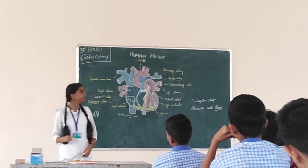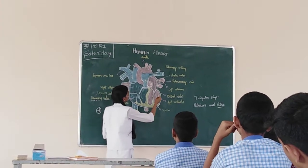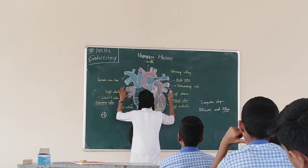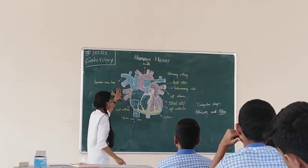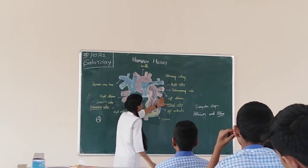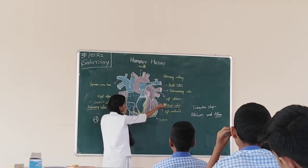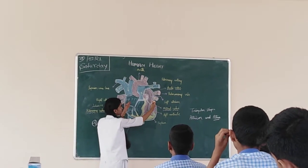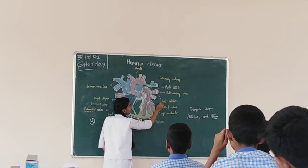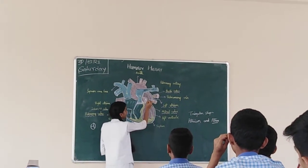The alveoli present in the lungs oxygenate the blood. The oxygenated blood is then sent to the pulmonary veins — the right pulmonary vein and left pulmonary vein. The oxygenated blood then comes back to the heart, entering the left atrium.